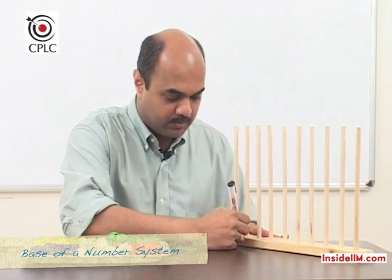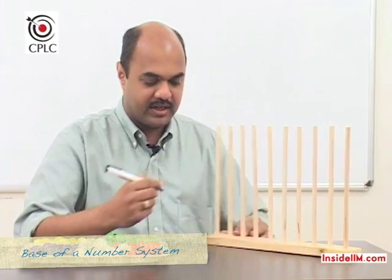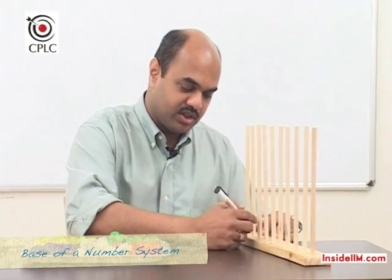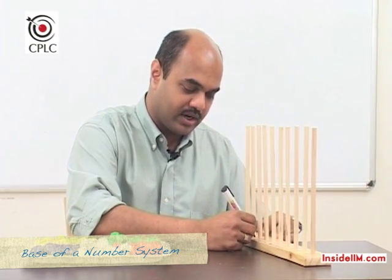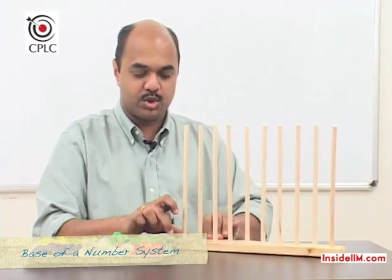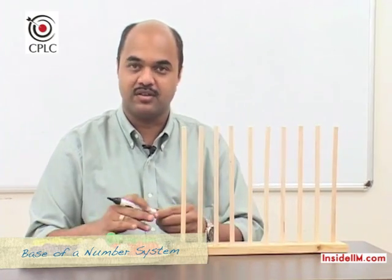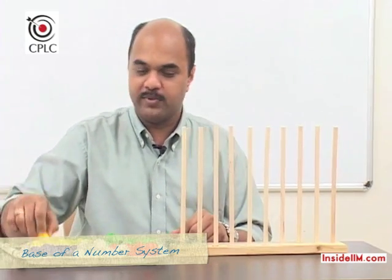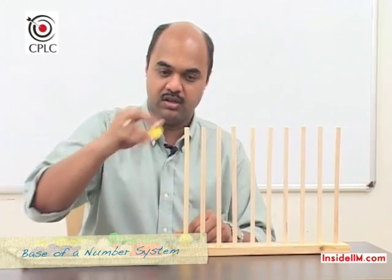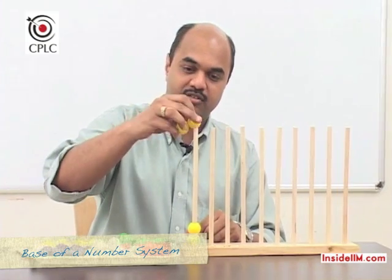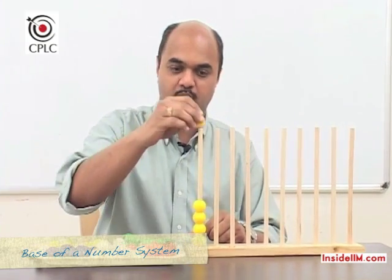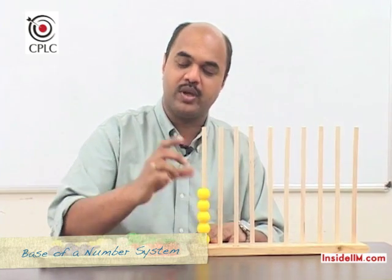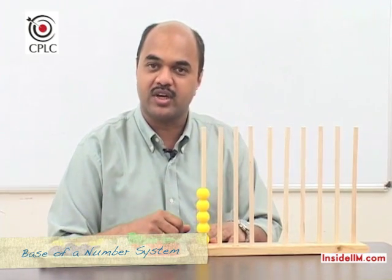The second column is the tens digit, which we write down as 10 raised to 1, and the third digit — the hundreds digit — we write down as 10 raised to 2, and if we go on in this manner. A different way of counting would be if I were to put in 5 beads into this first column, which has a place value of 1 — these put together would be counted as 5.